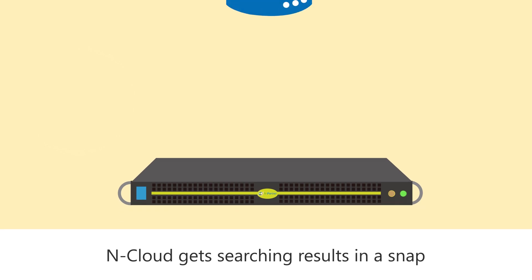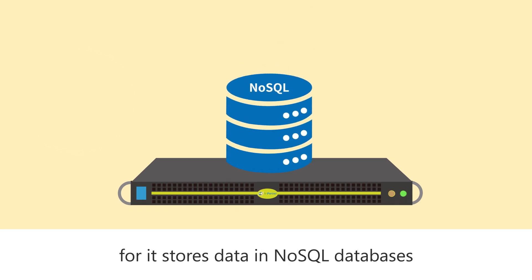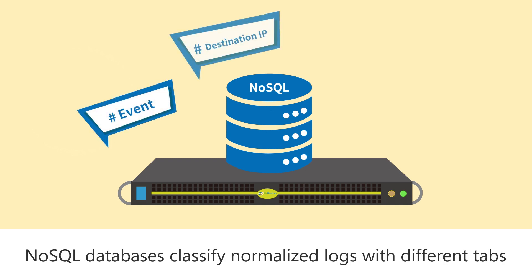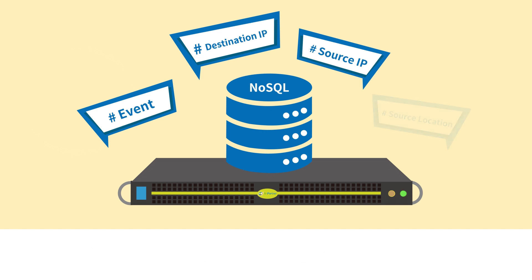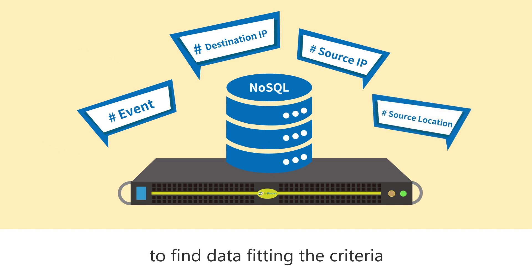nCloud gets searching results in a snap because it stores data in NoSQL databases. NoSQL databases classify normalized logs with different tabs. When users search in the system, nCloud checks the tab of each log to find data fitting the criteria.